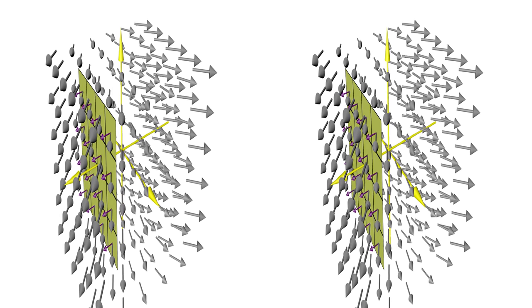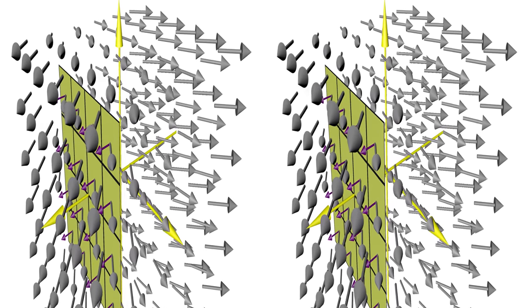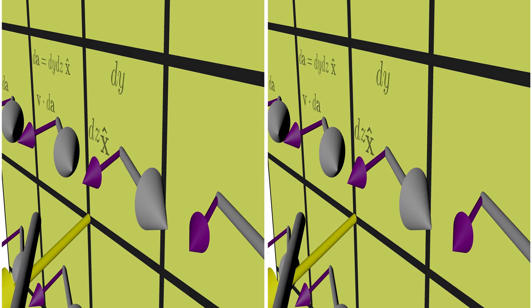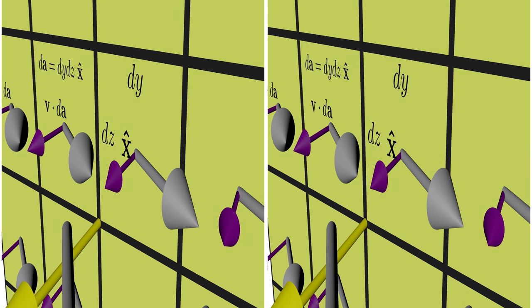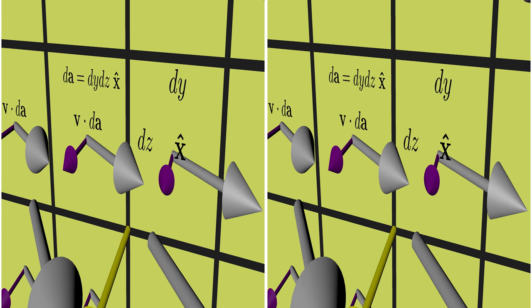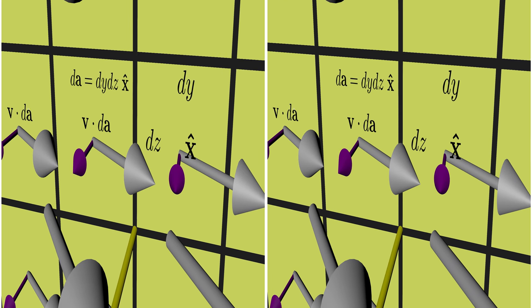Say you want to know the total amount of flux through a particular surface, or in other words the extent to which a vector field pierces through that surface. In this case you would integrate over all contributions where the infinitesimal patch dA is perpendicular to the surface. This is called a surface integral.